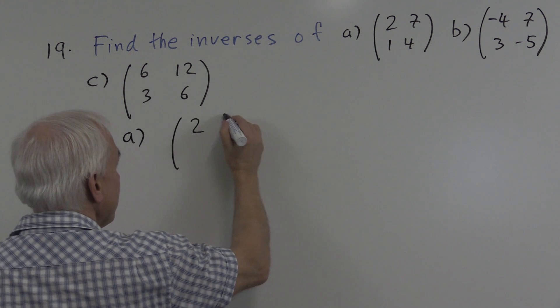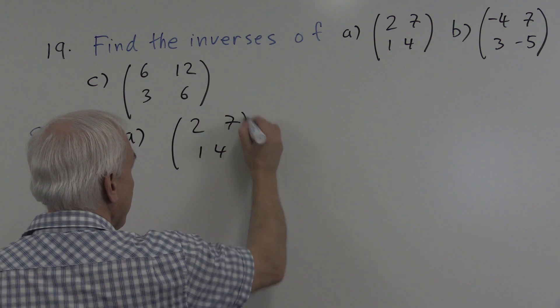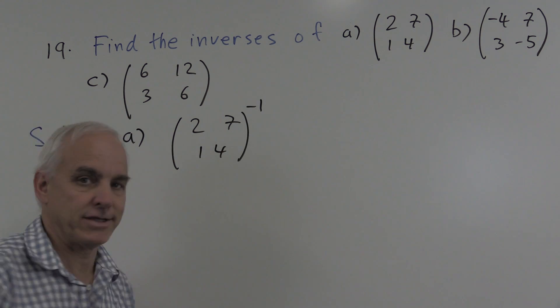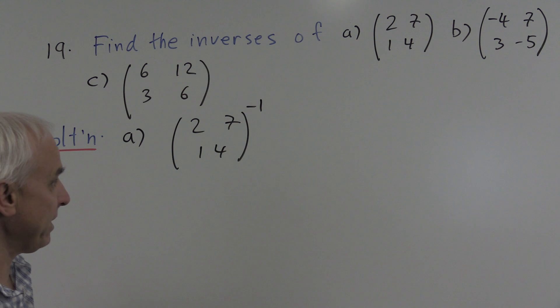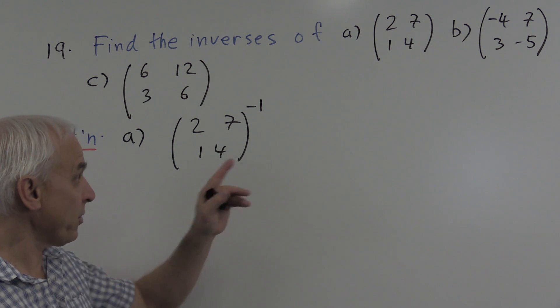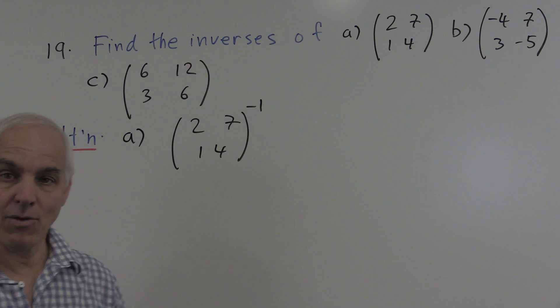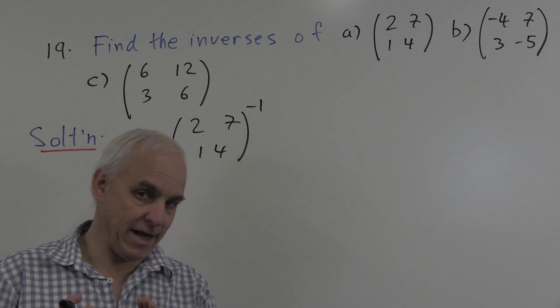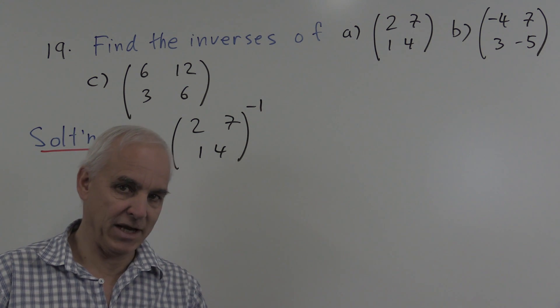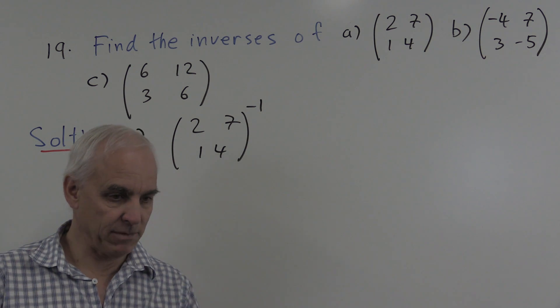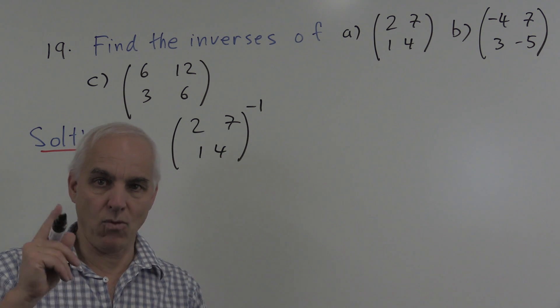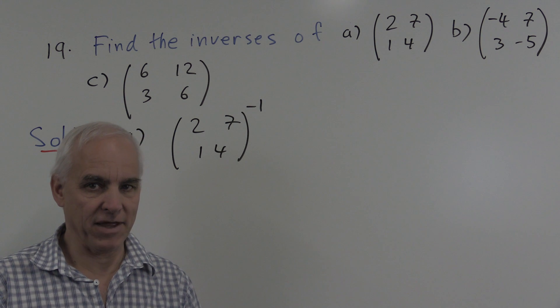So two, seven, one, four. We want to find the inverse of that matrix. It means that we want to find a matrix so that when we multiply it with this one, we get the two by two identity matrix. Just like the inverse of three is one third, means when you multiply three times one third, you're getting one. Same kind of thing here.